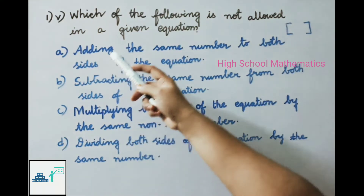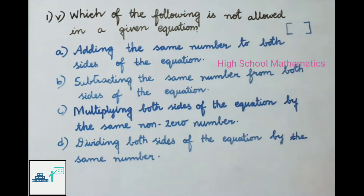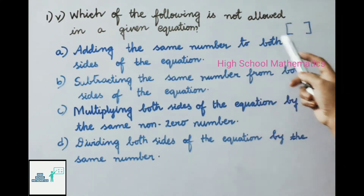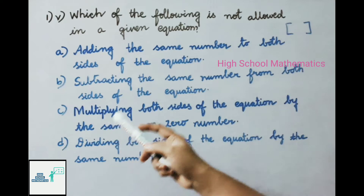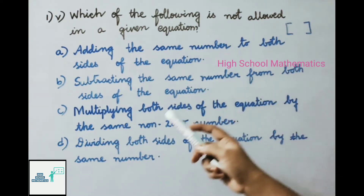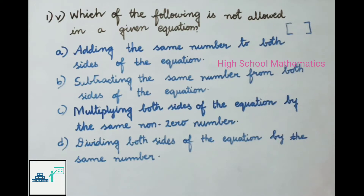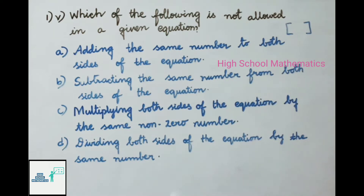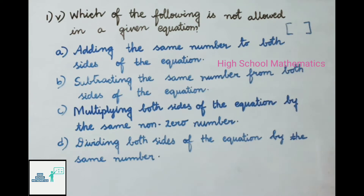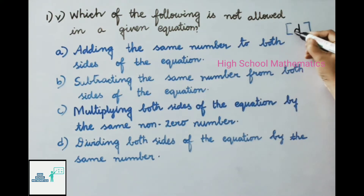Fifth question: which of the following is not allowed in a given equation? Options: A) adding the same number to both sides, B) subtracting the same number from both sides, C) multiplying both sides by the same non-zero number, D) dividing both sides by the same number. Option D is not allowed because it should specify dividing by the same non-zero number. So the answer is option D.